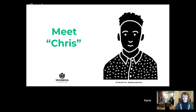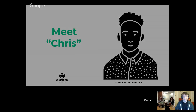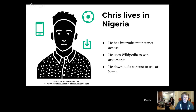And this is Chris. Chris lives in Nigeria. He has intermittent Internet access — sometimes he's online, but sometimes he can't go online. He likes to use Wikipedia to win arguments, specifically about sports. He wants to have the right answer about how tall a particular football player is. And he downloads content to use at home when he doesn't have Internet.